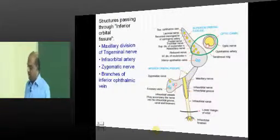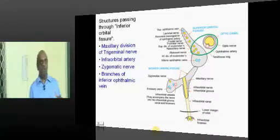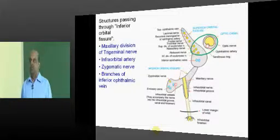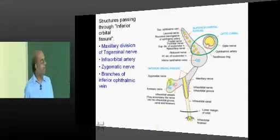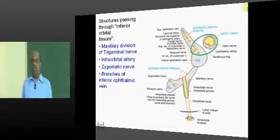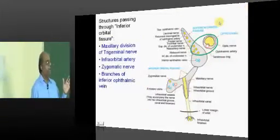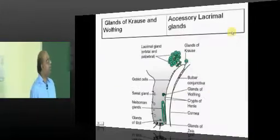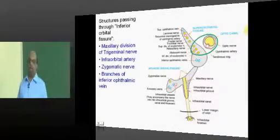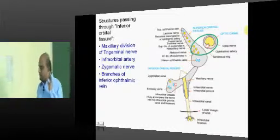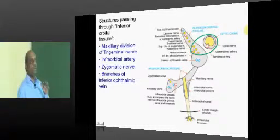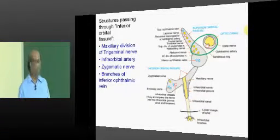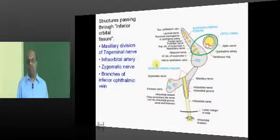Another question of mere nonsensical value only for entrance which you need to remember is contents of inferior orbital fissure and annulus of Zinn and superior orbital fissure. You must be sure like a parrot. From ages immemorial, entrance-going students are expected to know these things like a parrot. That is the reason parrots stop the entrances.